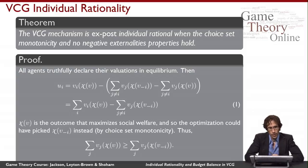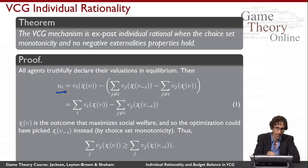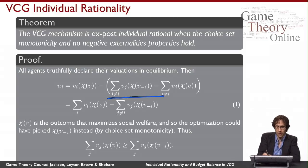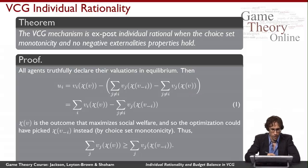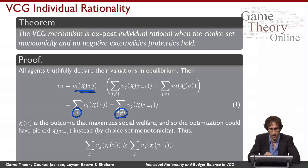Here's how we prove it. We begin by assuming all agents truthfully declare their valuations in equilibrium. Agent I's utility for participating is his value for the allocation VCG actually makes — given everyone reports truthfully — minus the VCG payment function. Since everyone reports truthfully, there are no V-hats, so we can collect terms: we get a sum over all agents minus a sum over all agents except I.